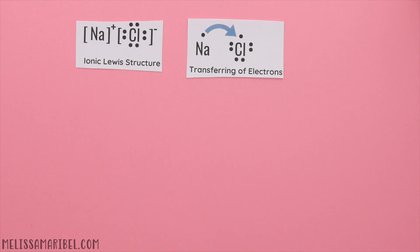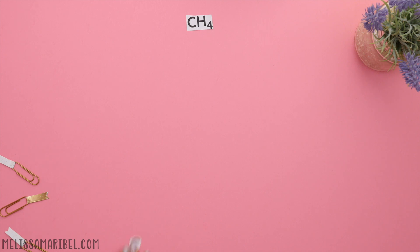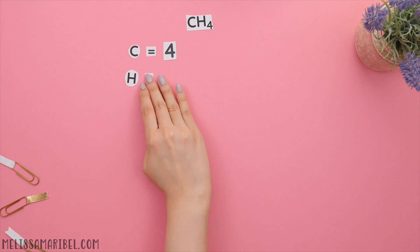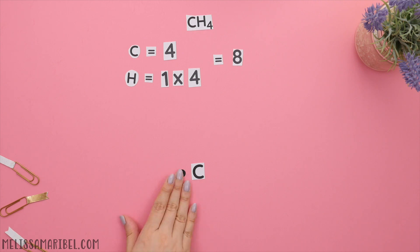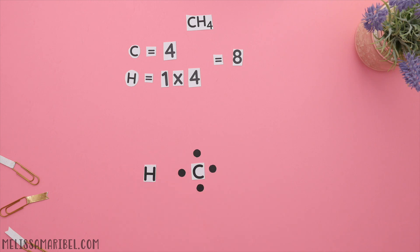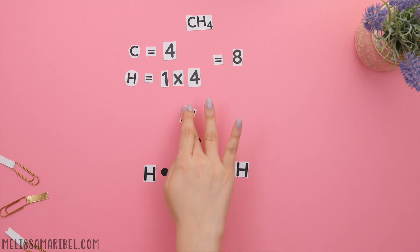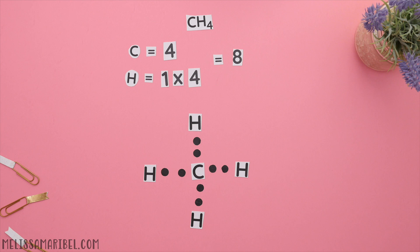Say we wanted to draw the Lewis structure for CH₄. First we'd identify how many valence electrons we have: carbon has four, hydrogen has one multiplied by four since there is a four subscript. Add everything together and we have eight total valence electrons. If carbon is in your molecule, then carbon is the central atom — this is also due to hydrogen only being able to make one bond due to it only having one valence electron. So we'll place carbon in the center surrounded by its four valence electrons, and place the four hydrogens with one valence electron on each. Two valence electrons form one single bond, so this is our correct Lewis structure.